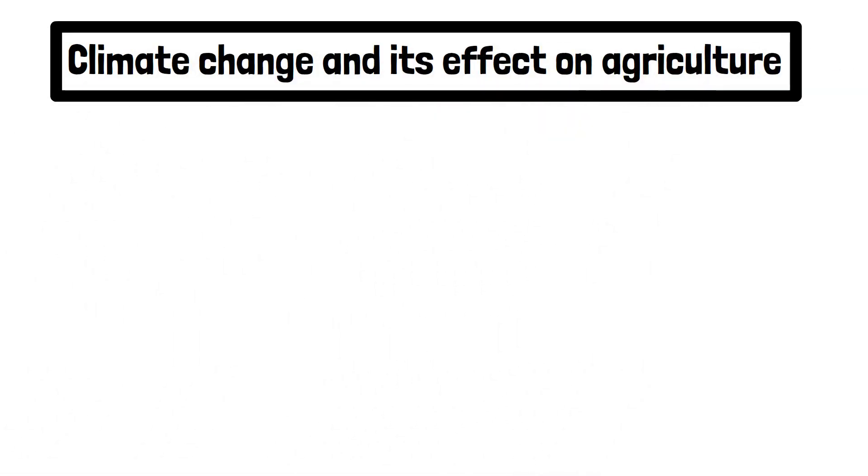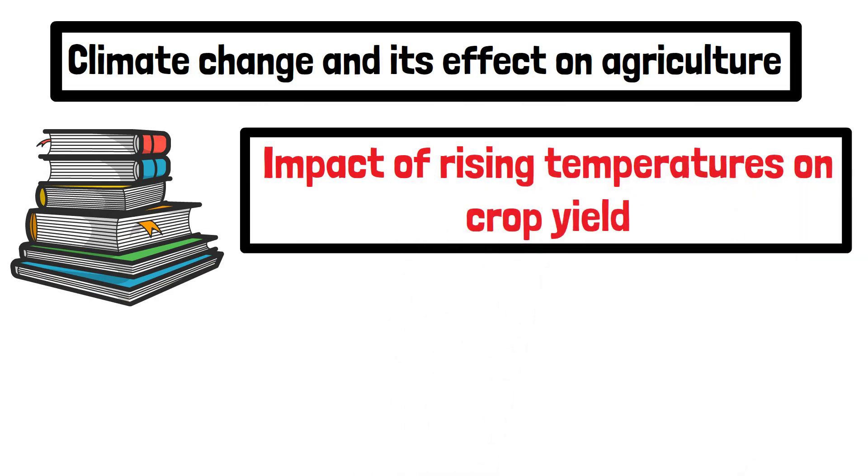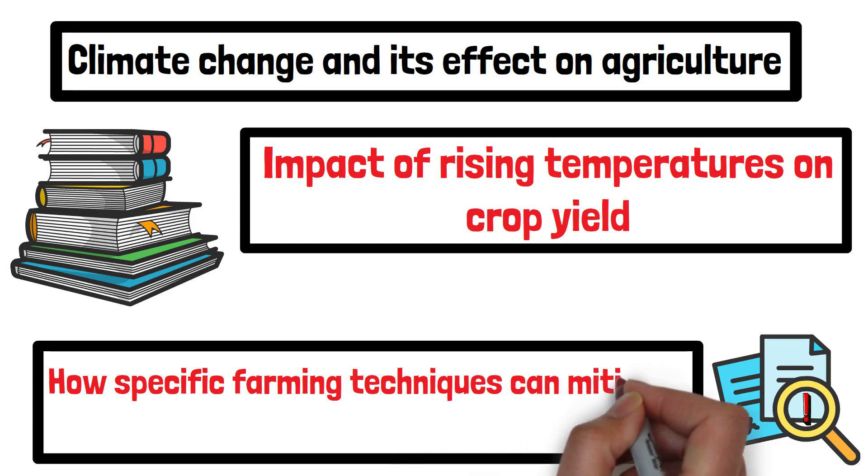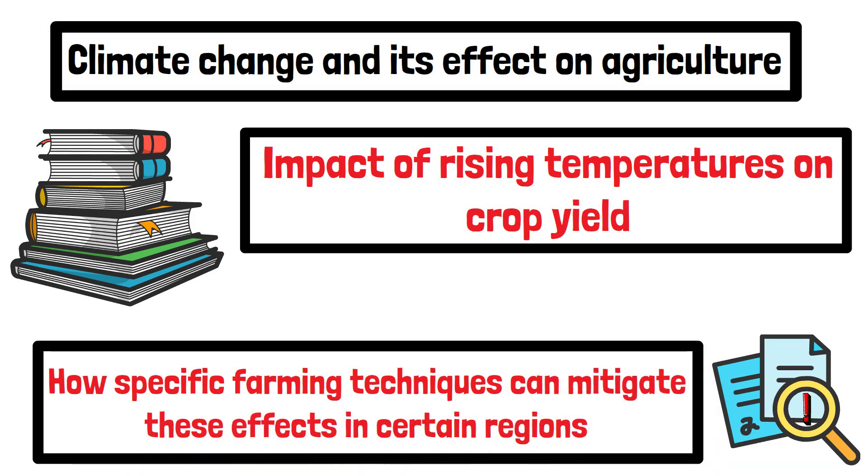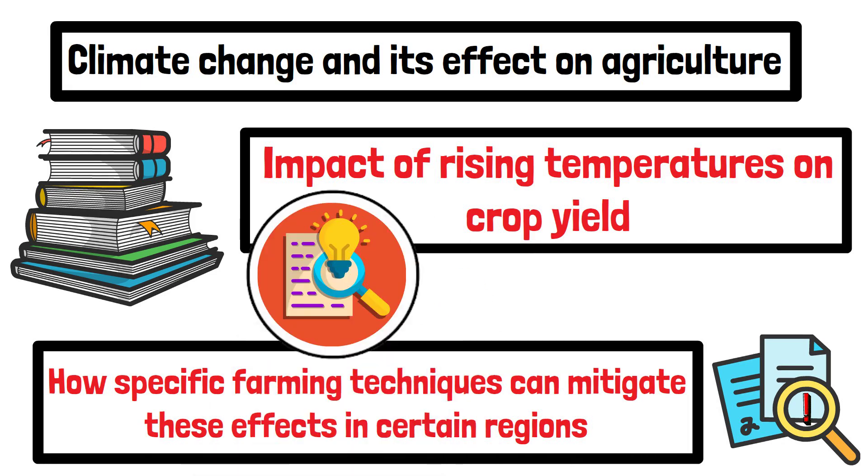For example, consider the topic of climate change and its effect on agriculture. While many studies have focused on the impact of rising temperatures on crop yield, there might be a lack of research on how specific farming techniques can mitigate these effects in certain regions. This unstudied region represents a research gap that could lead to new discoveries.